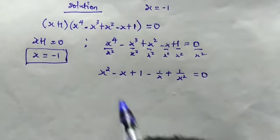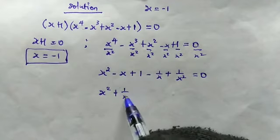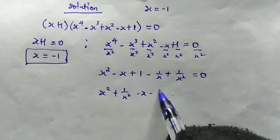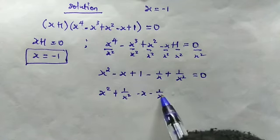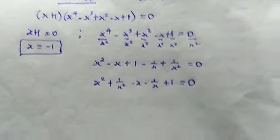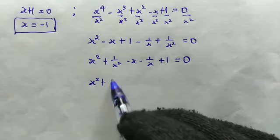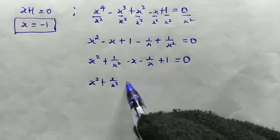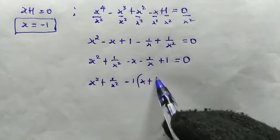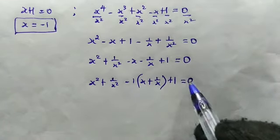From here we group the terms: we have x squared plus 1 over x squared, then minus x minus 1 over x, then plus 1, and this is equal to 0. We can factor out a negative 1 from the middle terms, giving x squared plus 1 over x squared, minus 1 times (x + 1/x), plus 1 equals 0.